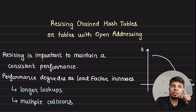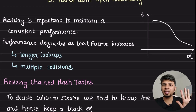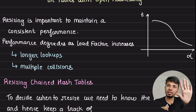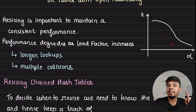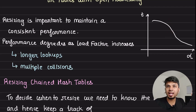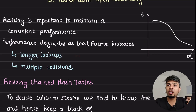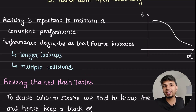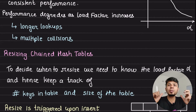Resizing is important to maintain consistent performance. Performance degrades as the load factor increases. The load factor is a simple ratio of the number of keys in your hash table divided by the number of slots. As it approaches one, lookup time starts to degrade, primarily because it takes longer to do lookups due to heavy collisions — finding an empty slot or traversing the collision chain to find your key takes much more time.